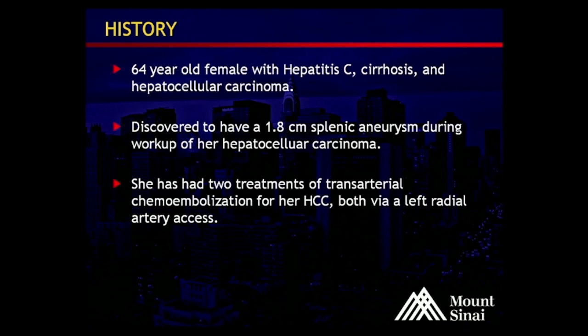This is a 64-year-old female with a history of hepatitis C and cirrhosis, as well as hepatocellular carcinoma. During workup of her HCC, a splenic aneurysm measuring approximately 1.8 centimeters was discovered. She has since had two treatments of trans-arterial chemoembolization for her hepatocellular carcinoma, both via left radial artery access.